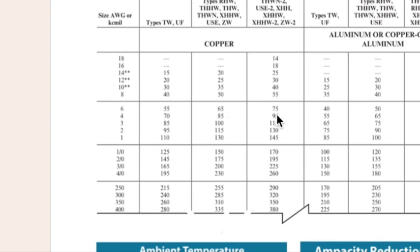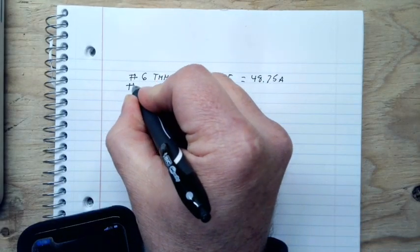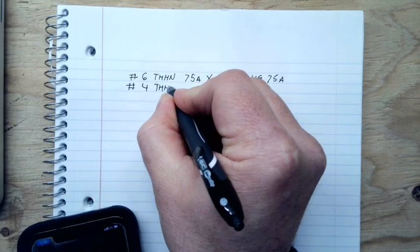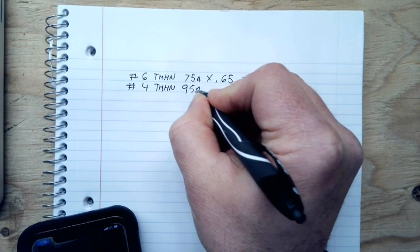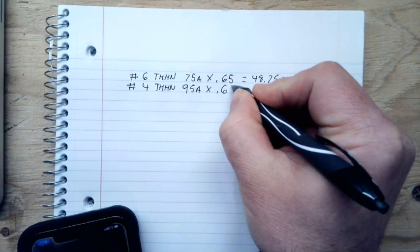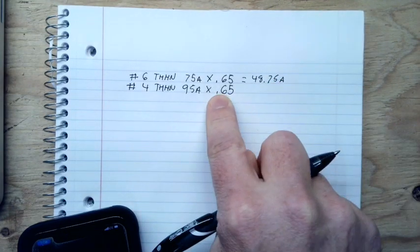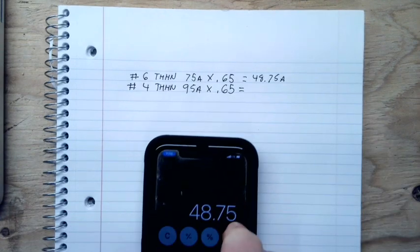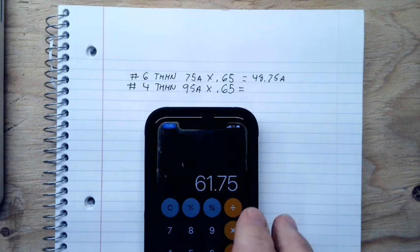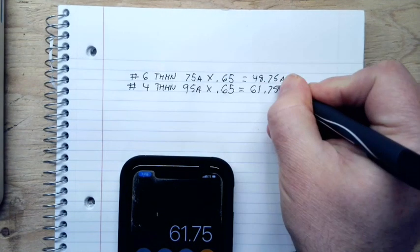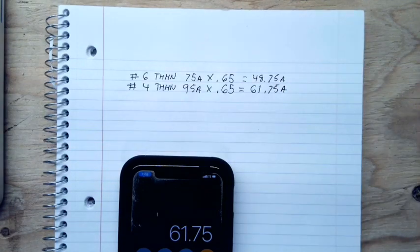So then I'm going to slide over, and that is good to 95 amps. So I have a number 4, THHN, which is good to 95 amps times, now the correction factor won't change, so we can just bring that down. And now that is going to be 95 times 0.65 equals 61.75. Still not good enough to meet our 70 amp that we're looking for. So we've got to keep upsizing.